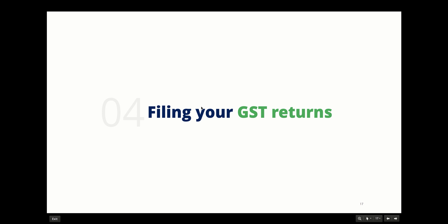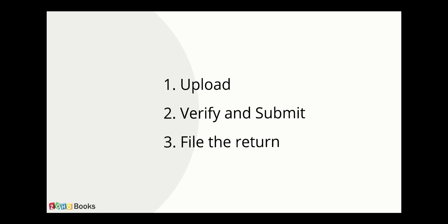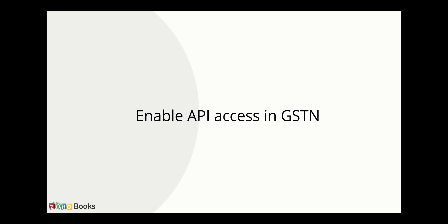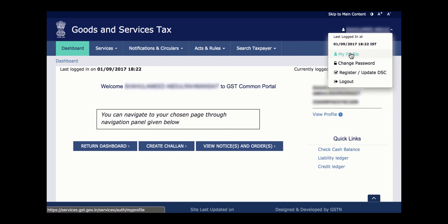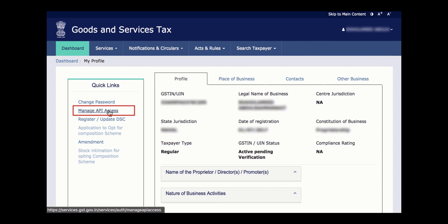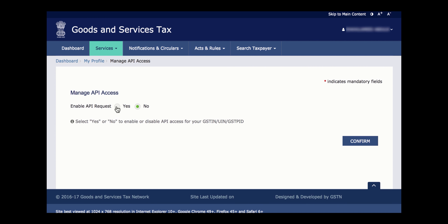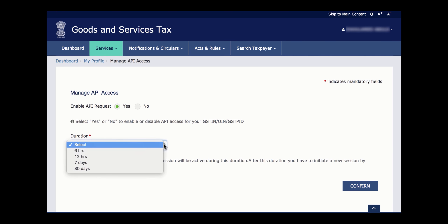The last part of this webinar is filing your GST returns. Filing your GST returns involves three steps: uploading your transactions to the GSTN, verifying and submitting your transactions, and finally filing your returns. Before you file your returns in Zoho Books, you will have to first enable API access from your GSTN portal. Only on doing so will you be able to file your returns from within Zoho Books. To do that, login to your GSTN portal, click on My Profile from the top right, select Manage API Access under Quick Links, select Yes for Enable API Request, and select an appropriate duration. Finally, confirm it.